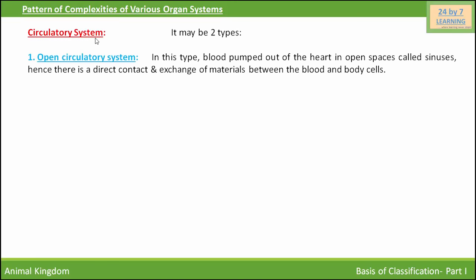Next is the circulatory system, which may be of two types: open or closed. In an open type of circulatory system, blood is pumped out of the heart into open spaces called sinuses, resulting in direct contact and exchange of material between the blood and body cells. Open type of circulatory system is present in arthropods and most molluscs.